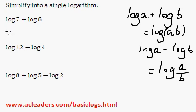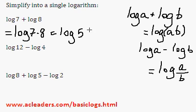So just starting with an easy one. Log 7 plus log 8 is just going to be log 7 times 8, which is log 56. It would be embarrassing if I got the times table wrong,